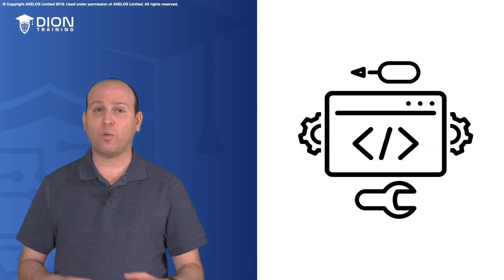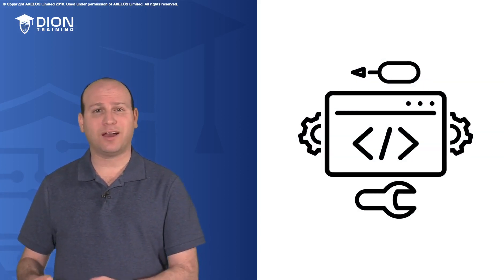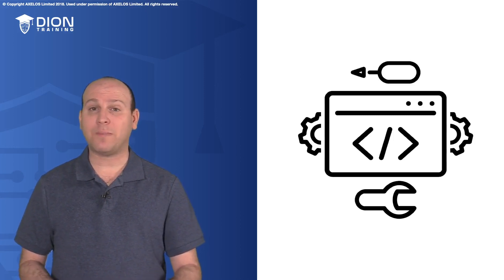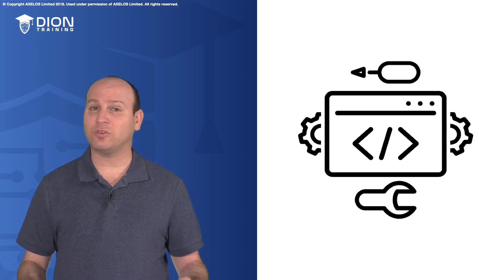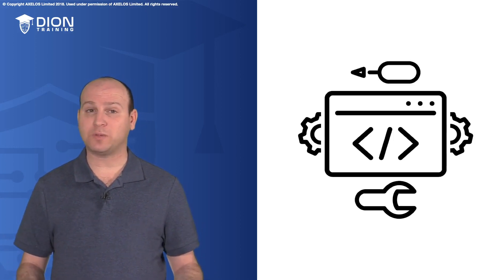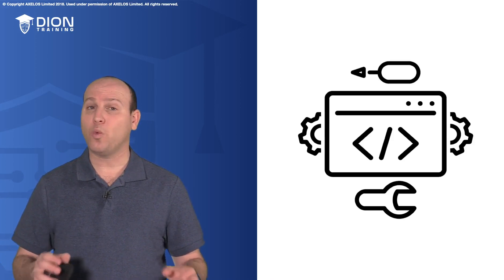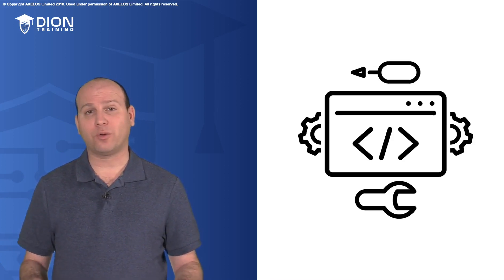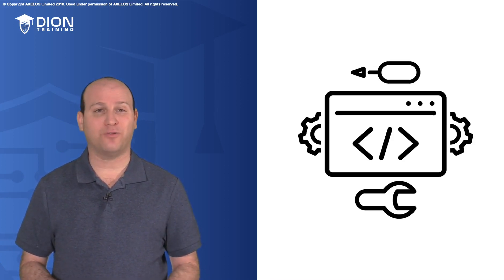As we figure out what our Service Configuration Management is and we know what all these CIs are and how they're configured, anytime we want to make a change to them through change control, this is going to feed back into the Service Configuration Management so we can update our database and know exactly what devices and assets we have throughout our organization, so we can get the most value from them.